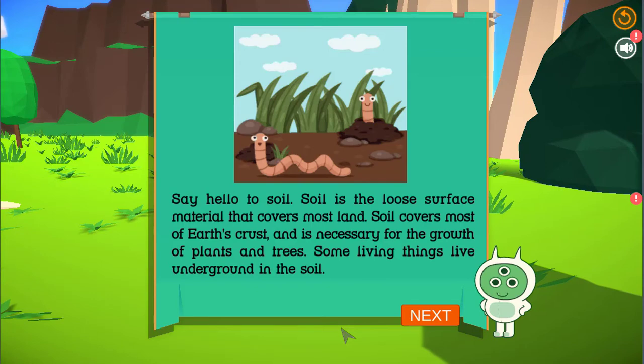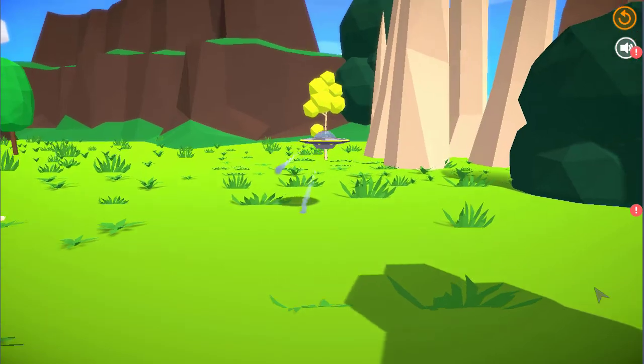Say hello to soil. Soil is the loose surface material that covers most land. Soil covers most of Earth's crust and is necessary for the growth of plants and trees. Some living things live underground in the soil.